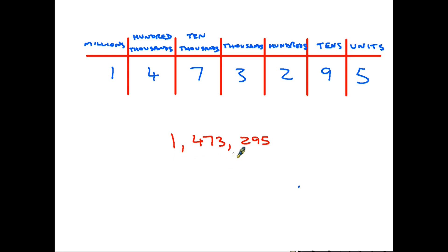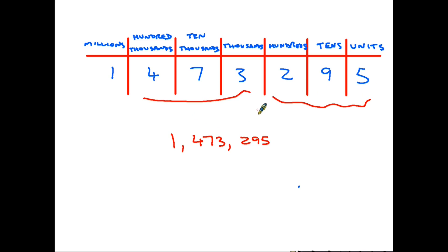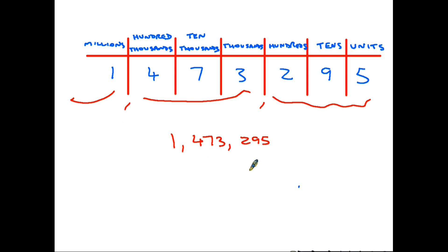The comma helps us say large numbers out loud. These three digits are all the thousands part, and from here on are the millions — in fact the next two columns would also be in the millions. So to help say a number out loud: start at the units end, count three digits, put a comma, count three more, put a comma, and it makes it much easier to say.